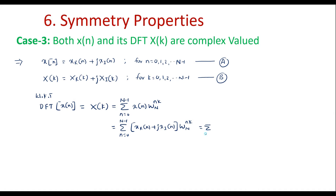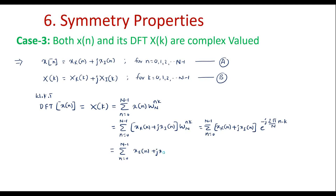This can be written as summation from n=0 to N−1 of [x_R(n) + j·x_I(n)] · e^(−j2π/N · n · k). We know that e^(−jθ) = cos θ − j sin θ, so we can represent the twiddle factor as [cos(2π/N · n · k) − j·sin(2π/N · n · k)].